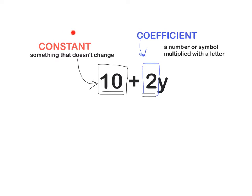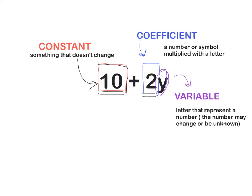Now we have our constant, we have coefficient, and then we have our letter y. It might be any letter in the alphabet - it might be d, c, z, a, b, or x. The most common is x, y, a, or b, but it can be any of them. Our letter y is unknown and in algebra we say it's a variable. This is a letter that represents a number, and the number might change or be unknown.